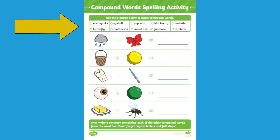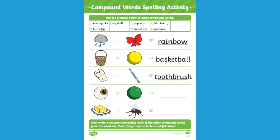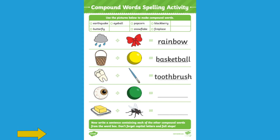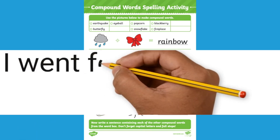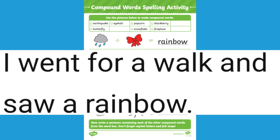For this activity your children have to use a selection of compound words to match up with the pictures below. They have to look at the two pictures and decide what the compound word must be. When they've filled in all the compound words they then have to write a sentence using them. You could get your children to write these sentences on a whiteboard or paper, and you could even get your children to read their sentences to the rest of the class.